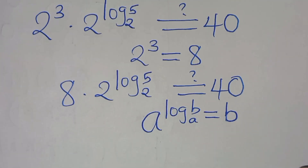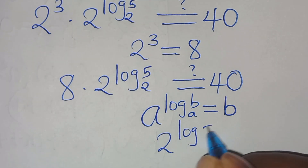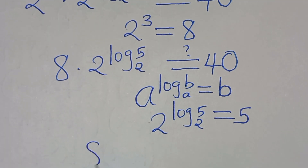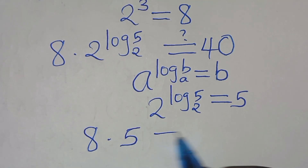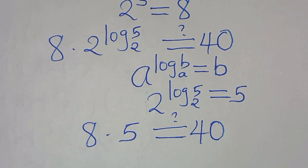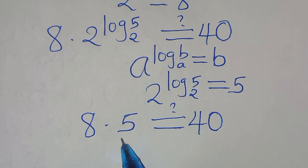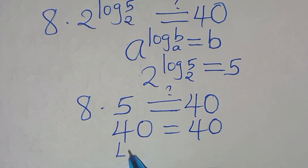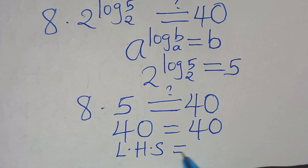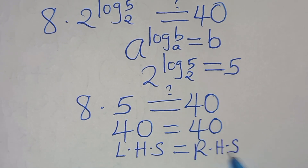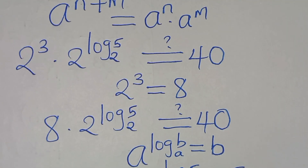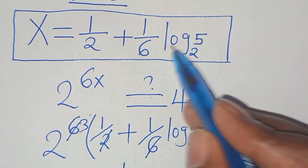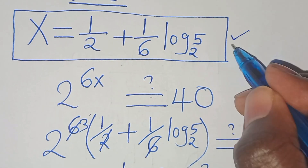Now 2 to the power of log 5 to base 2 — this is in the form a to the power of log base a of b, which equals b. So 2 to the power of log 5 to base 2 equals 5. Substituting, we have 8 multiplied by 5, which is 40, equal to 40. The left-hand side equals the right-hand side, confirming that x equals one half plus 1 over 6 log 5 to base 2 satisfies the equation.